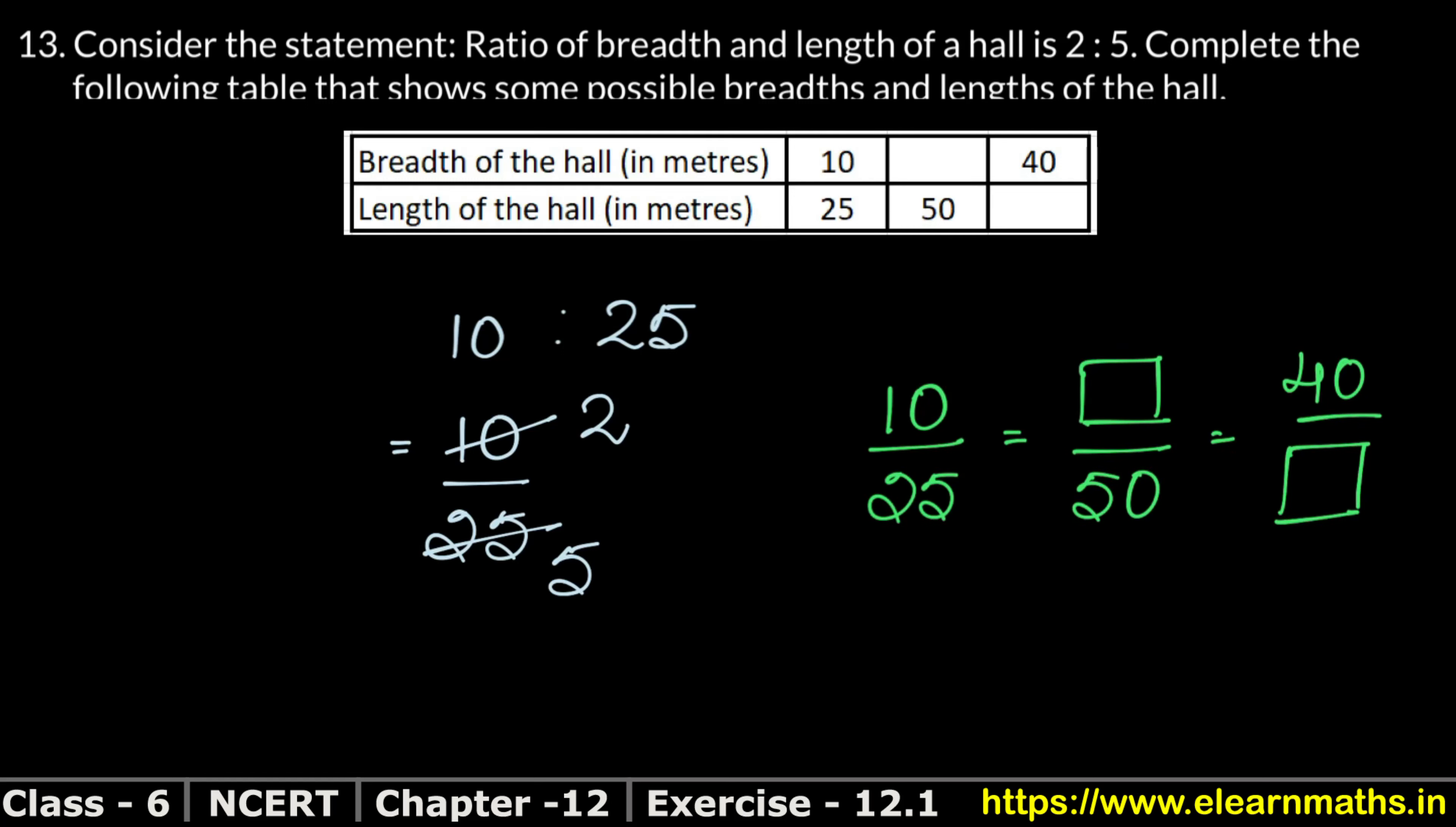These are the blanks we need to fill. See, 25 is becoming double. When we multiply, we get a bigger number. Since 50 is greater than 25, we're multiplying 25 by something. We know 2 times 25 is 50, so we multiply by 2. We'll multiply the same value above. So 10 times 2 will give us this value.